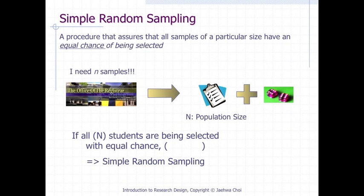One of the popular sampling methods is simple random sampling. This procedure assures that all samples of a particular size have an equal chance of being selected. If all subjects are being selected with equal chance, which is small n over large N, this sampling method becomes simple random sampling. This is very simple and easy to implement but requires a list of the entire set of the population.